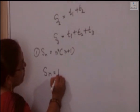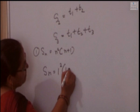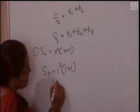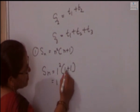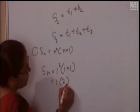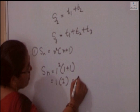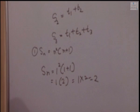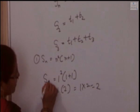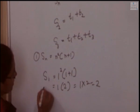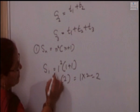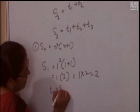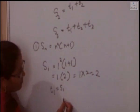For S1, substitute n equal to 1: 1² plus 1 plus 1. So 1 square is 1, giving 1 plus 1 plus 1 equal to 3. Wait — computing: 1 square is 1, 1 plus 1 is 2, result is S1 equal to 2. Since S1 equal to T1, the value of T1 is 2.